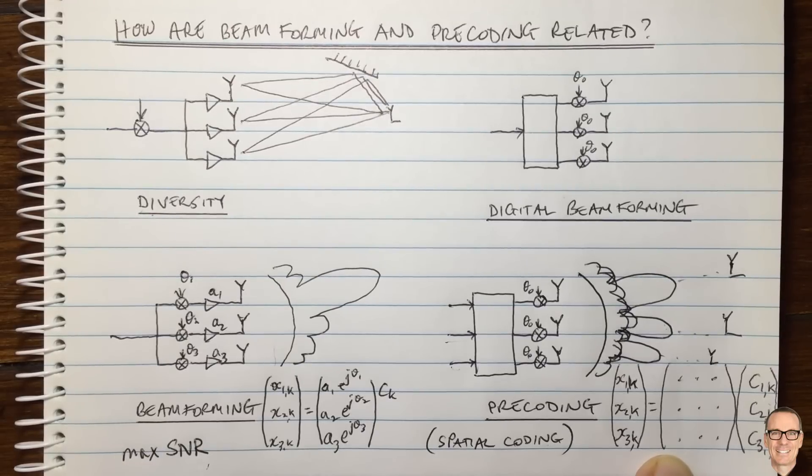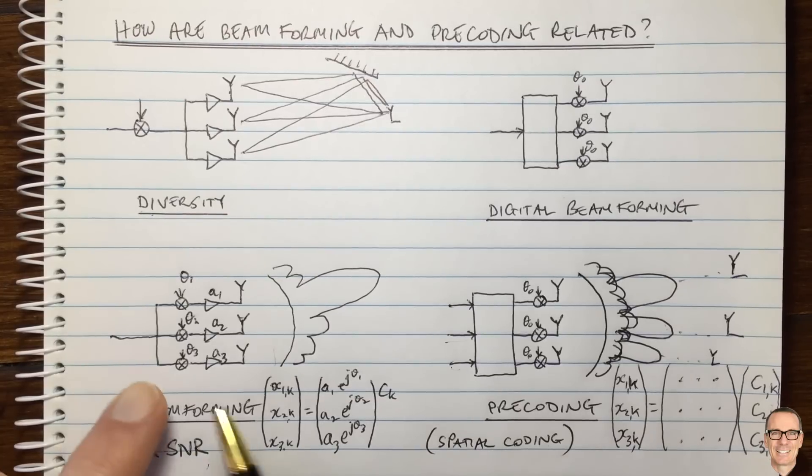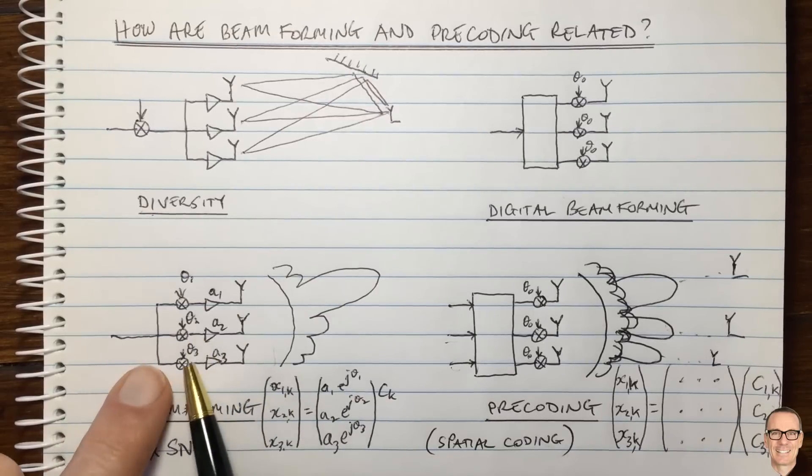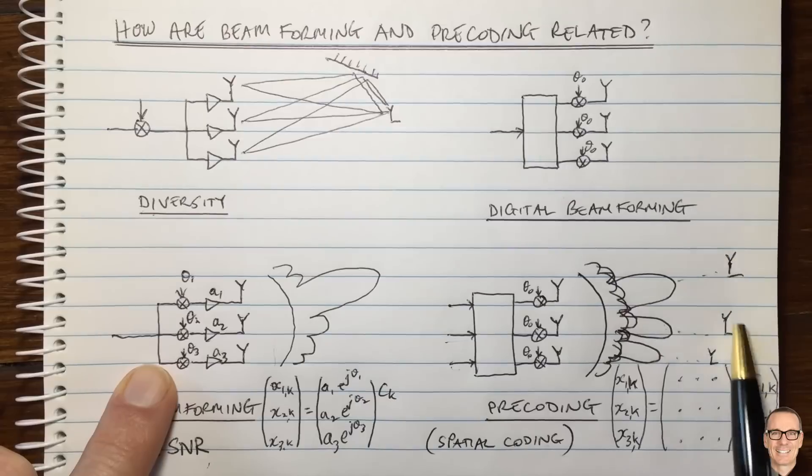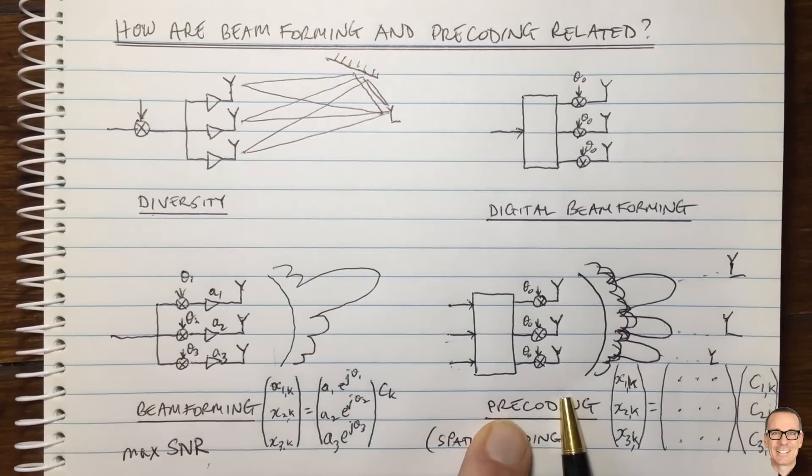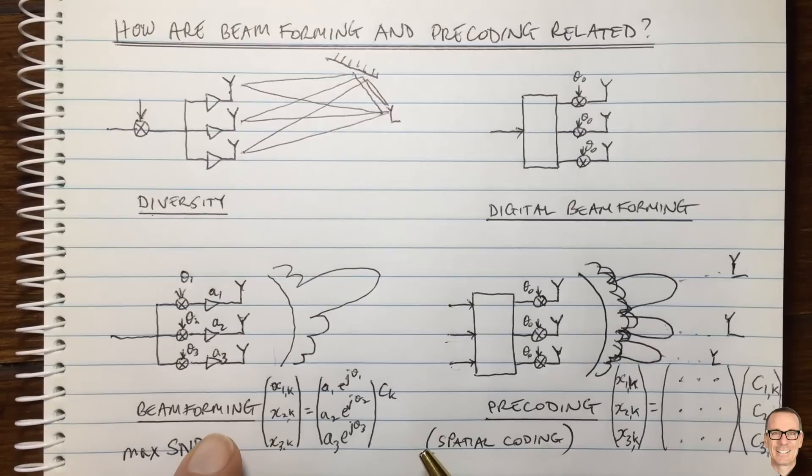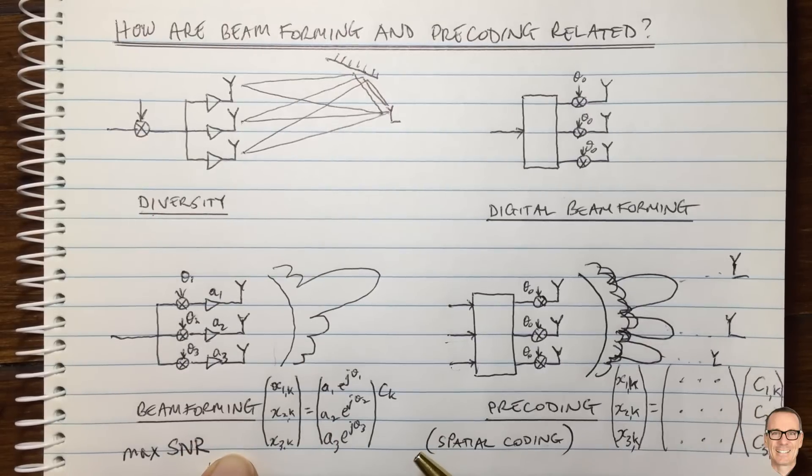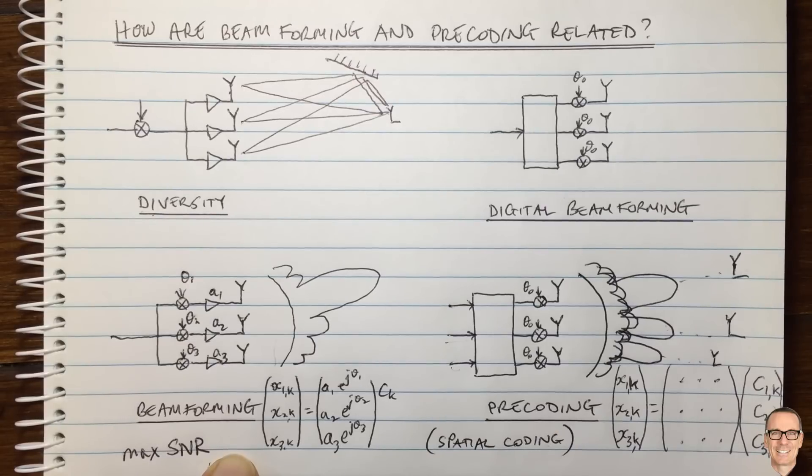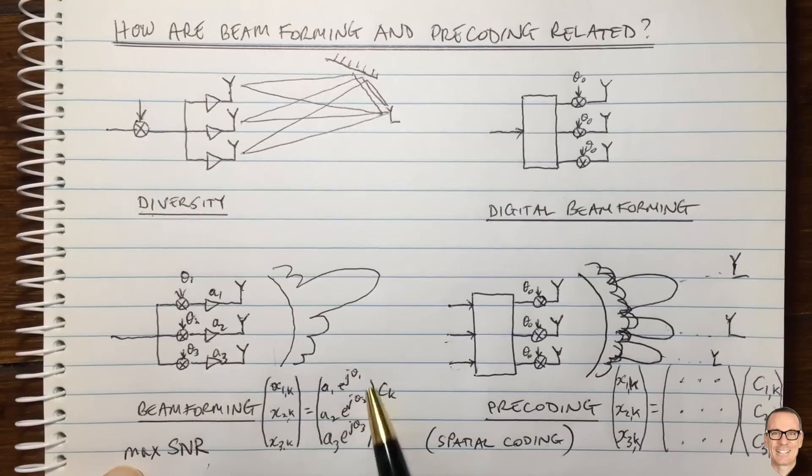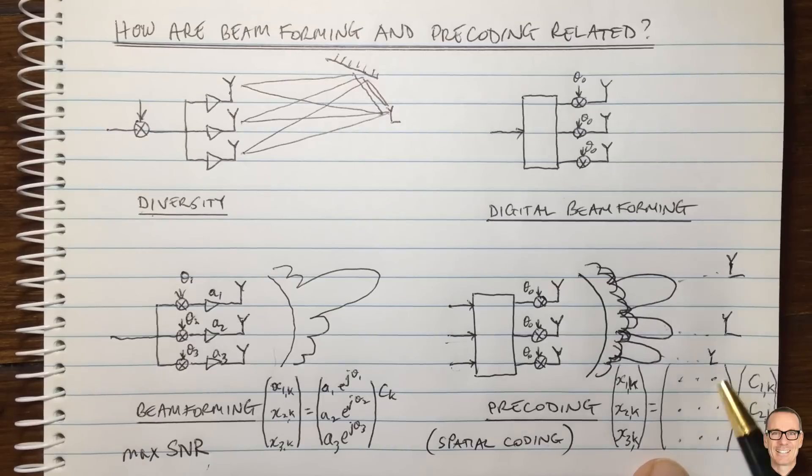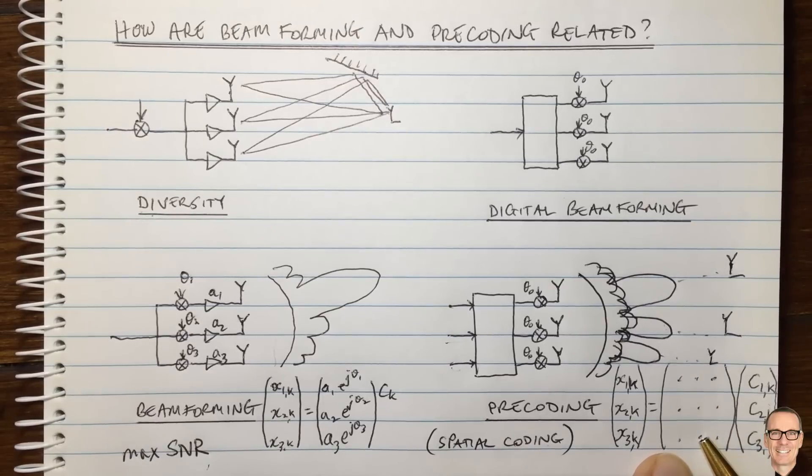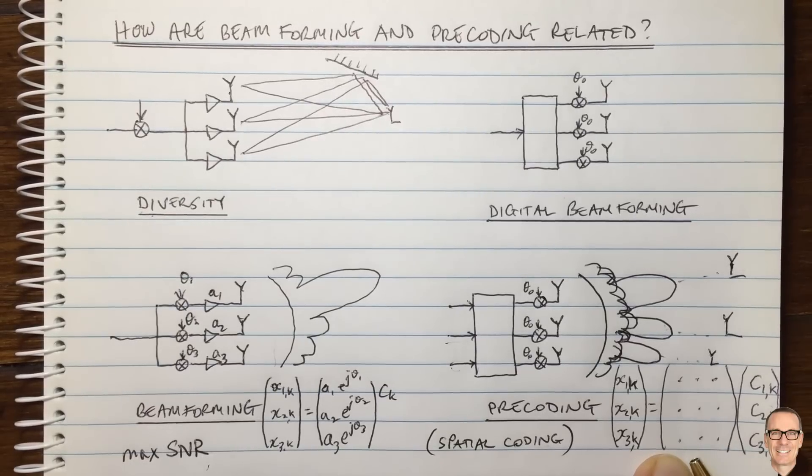There's a link below this video to other videos that discuss zero forcing and minimum mean squared error. One thing that's important to point out for all of these at the transmitter is that if you're going to direct your beams towards the receivers, whether it's beamforming or precoding, you need to know what the channel is at the transmitter. So you will have had to have done some training of the channel, sending training bits, and receivers sending back estimates of the channel so that you can then use those to find these parameters that maximize the SNR, or find these parameters that perform the optimal metric that you're looking for, whether it's SNR or zero forcing, or so on.